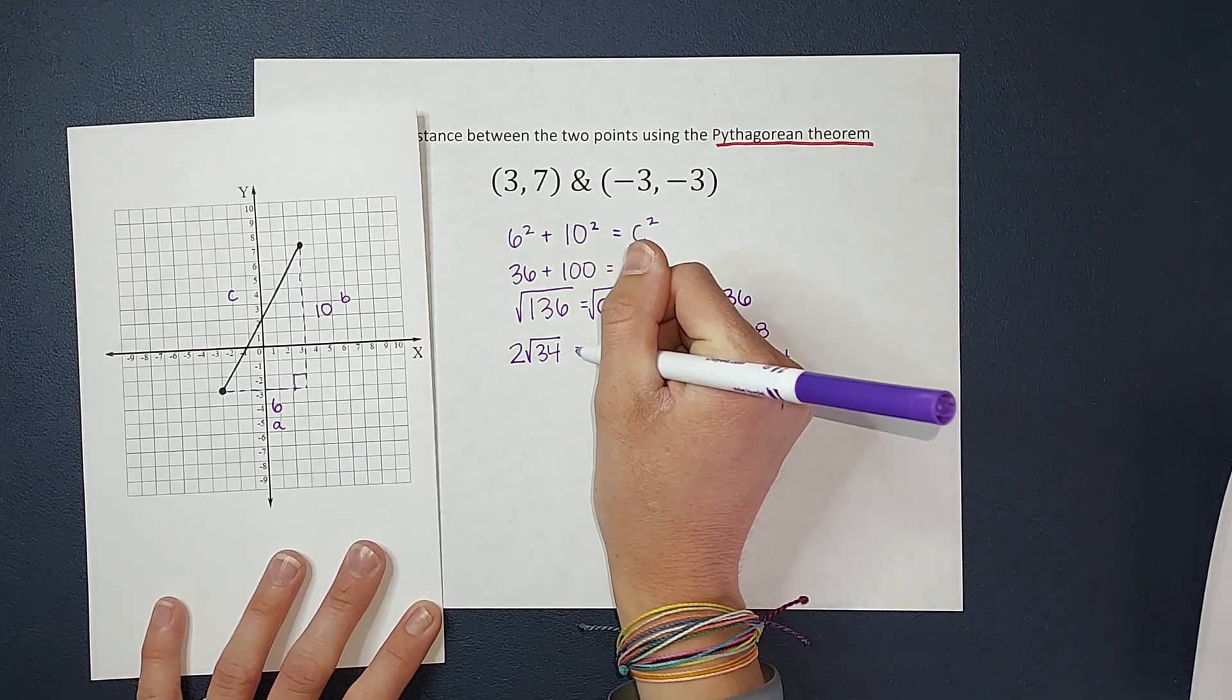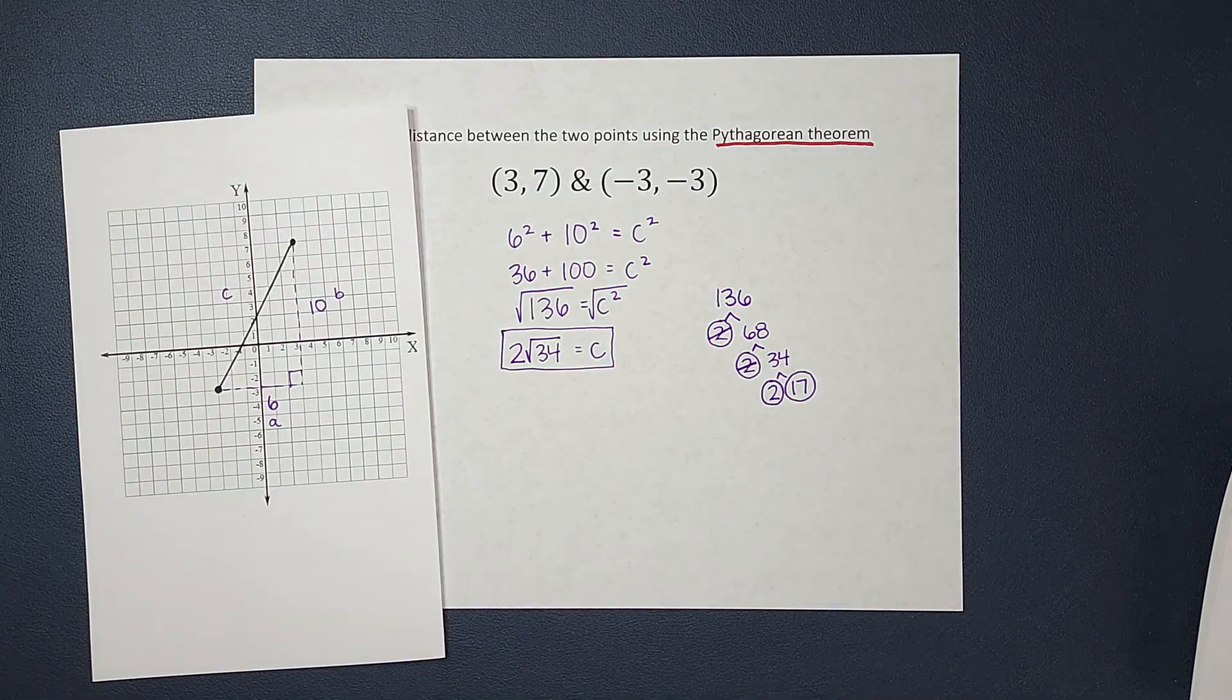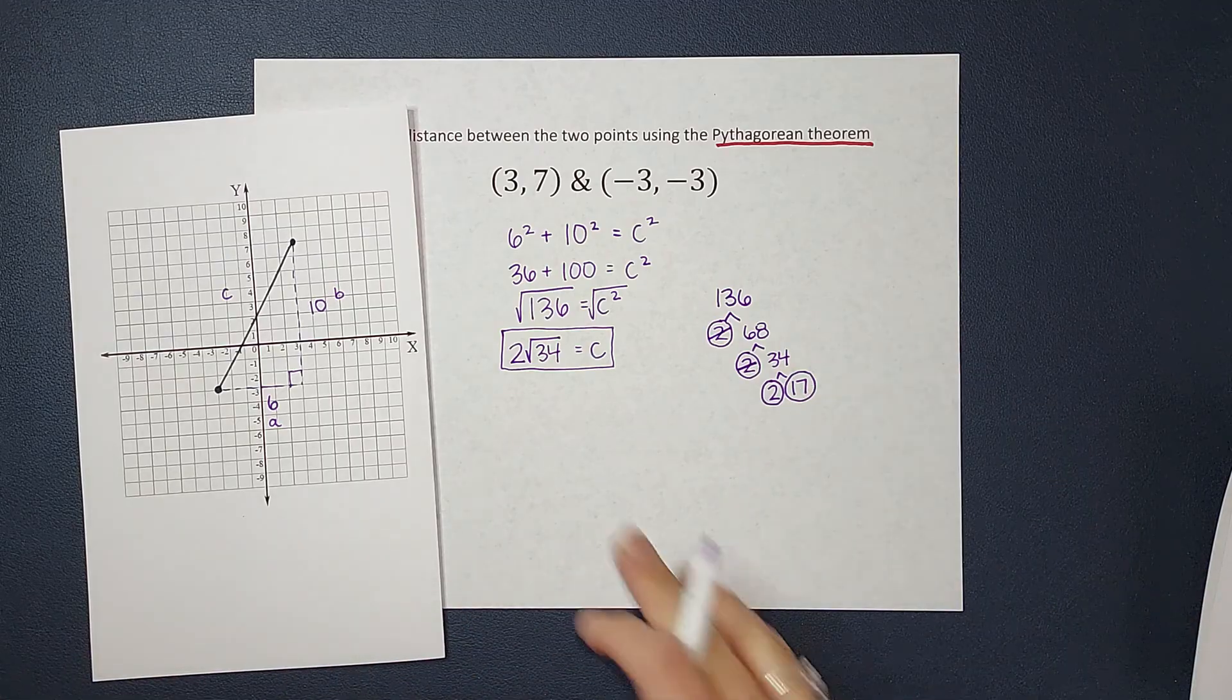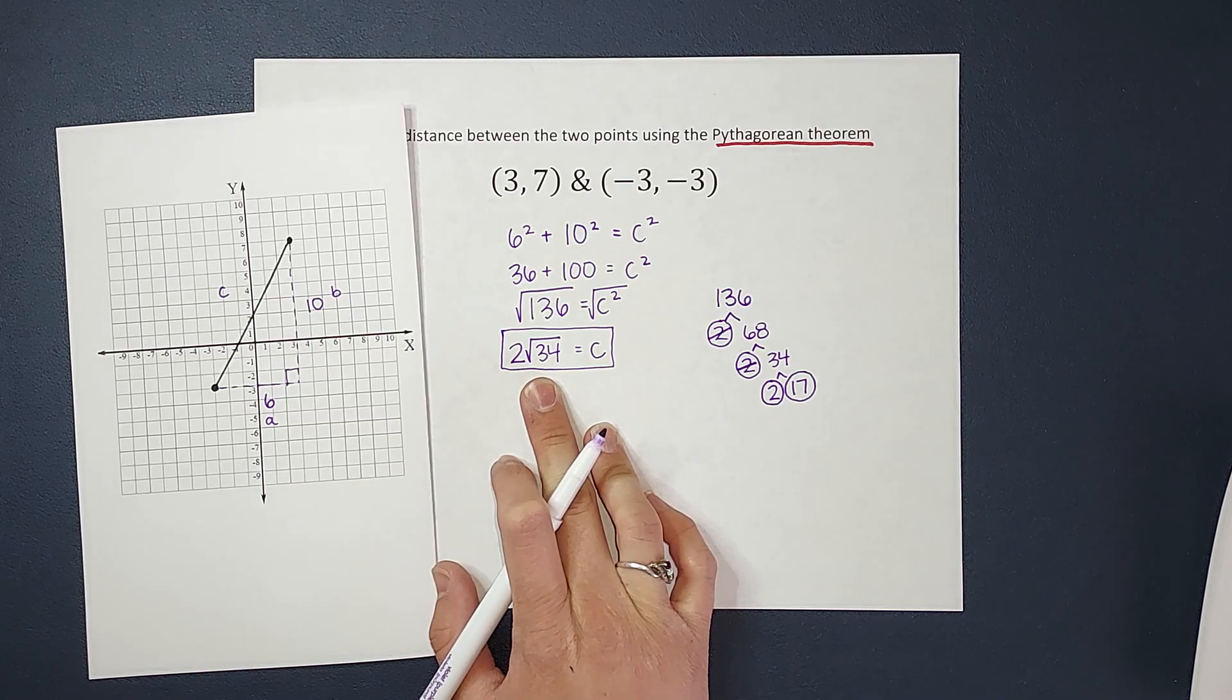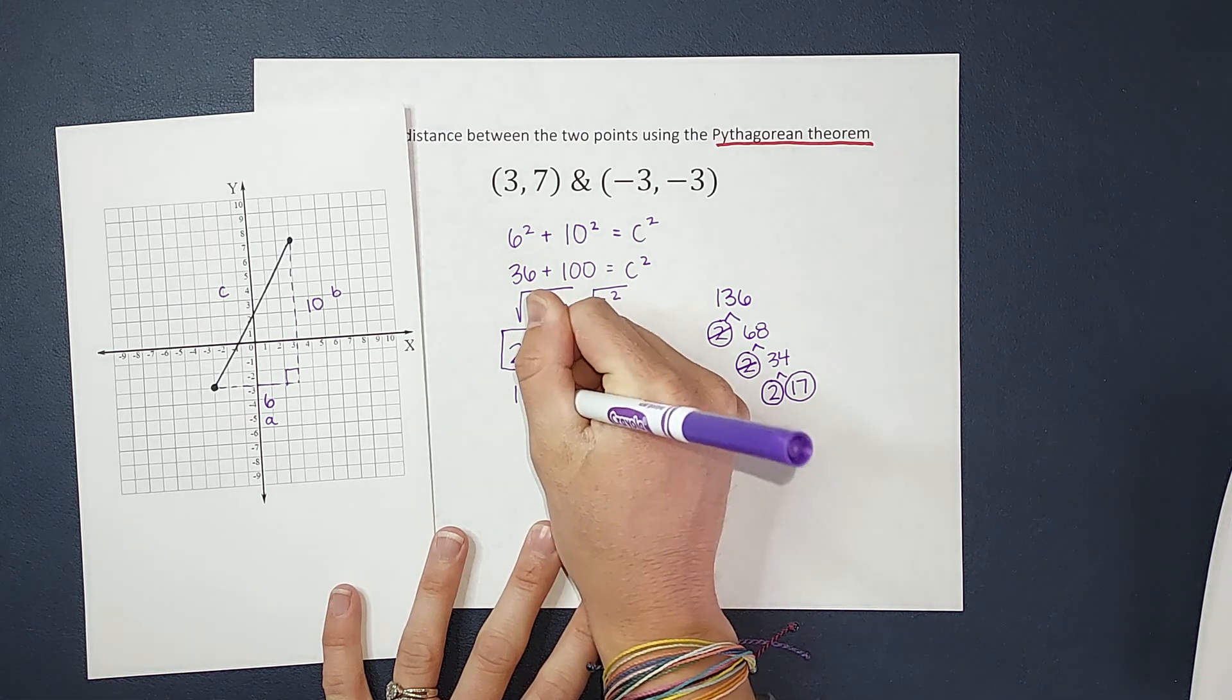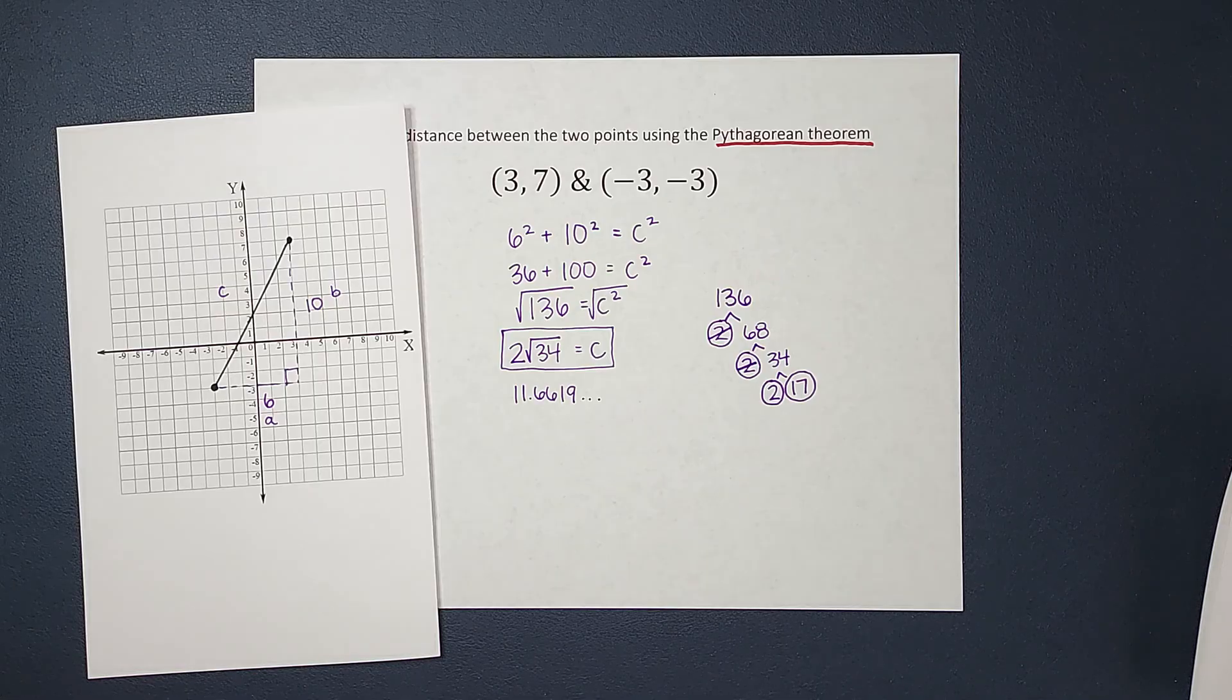And that is equal to c, and that is my answer. If you do want to know the decimal to kind of give you a bit of an idea, because I don't really know what 2√34 looks like, if you put this in your calculator, you're going to get 11.6619, and it keeps going, but that kind of gives you an idea of like, okay, it's a little over 11.5.